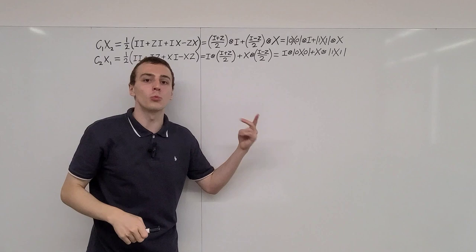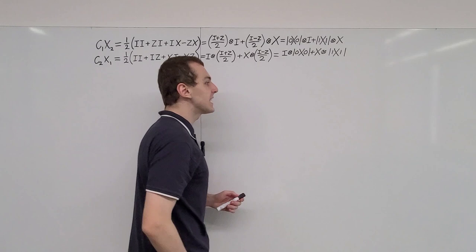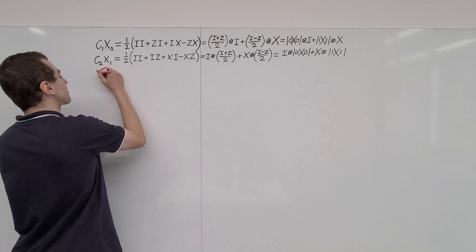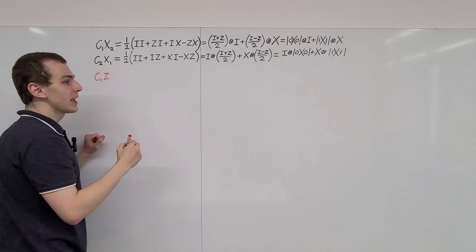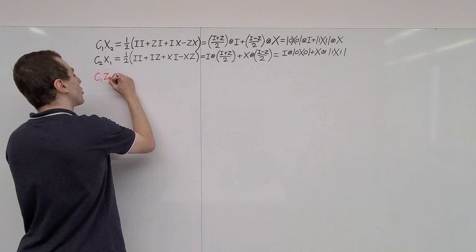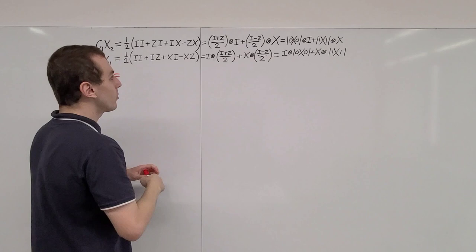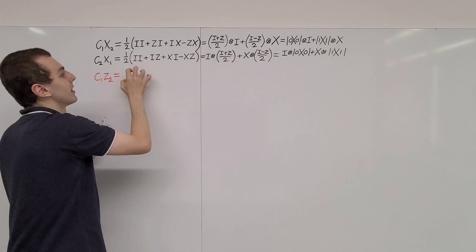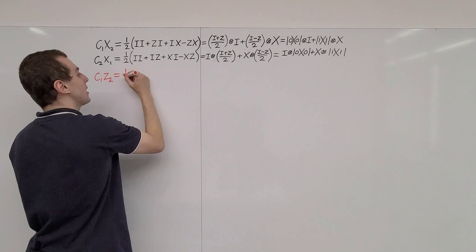So those are the two versions of the controlled NOT gate, depending on which qubit is the target. Now let's move on to the controlled Z gate, also called the controlled phase gate. By sandwiching the target qubit between Hadamards — since Hadamards translate between X and Z (bit flips and phase flips) — we can read off the linear combination for the controlled phase gate. We only need to consider the second entry because we're only looking at the target qubit.